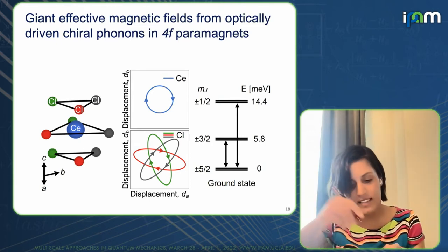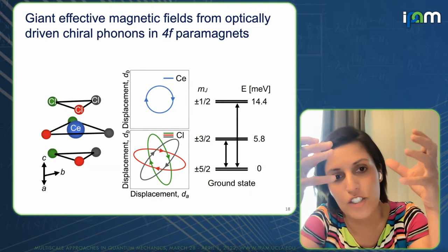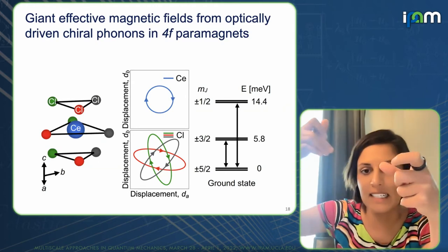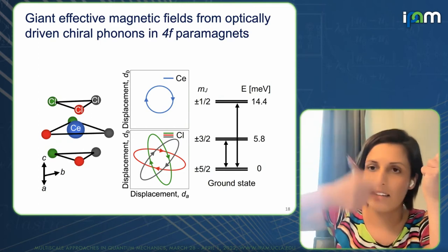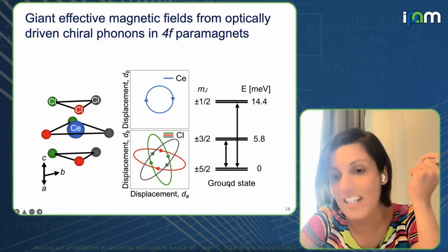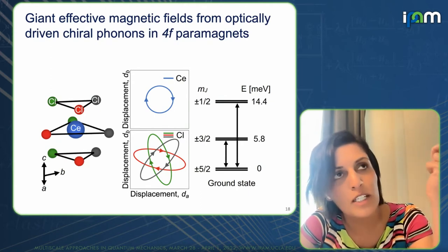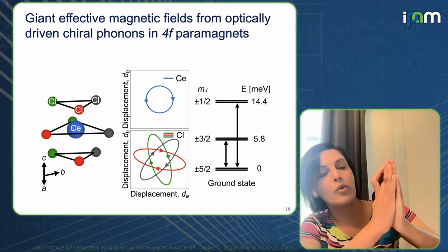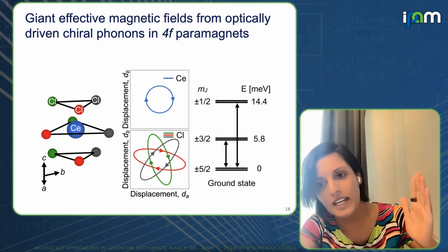In order for these chiral phonons to directly interact with the 4f paramagnetic spins, you need just the right structure. In cerium trichloride, I think of the cerium surrounded by chlorine ligands — you start moving the cerium and the chlorines start to move around it. Here's what the level structure looks like. To be truly non-equilibrium here, we actually needed to figure out the spectral signatures and do explicit time dynamics.